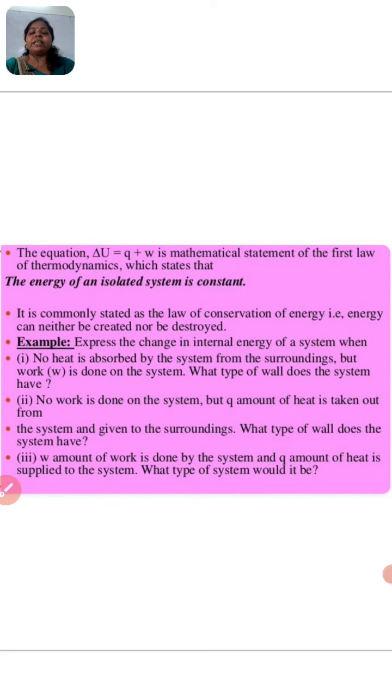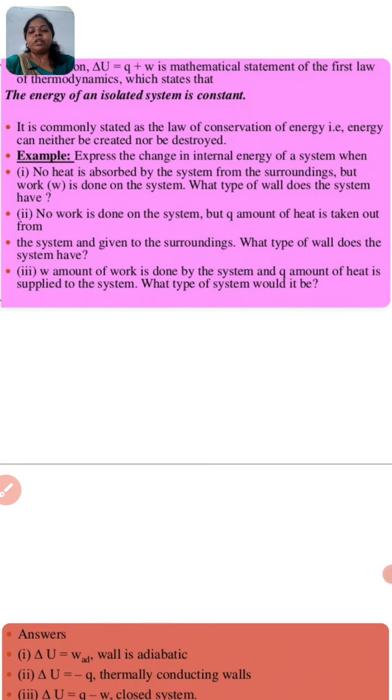Example: Express the change in the internal energy of a system when no heat is absorbed by the system from the surrounding, but work w is done on the system. What type of wall does the system have? No work is done on the system, but some amount of heat is taken out from the system and given to the surrounding. Then what type of wall? So, if the system is different, then the walls will also be different.